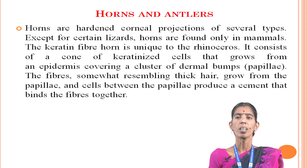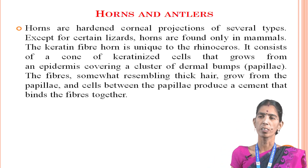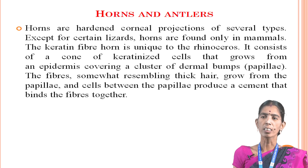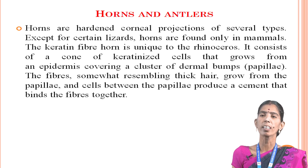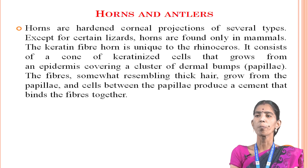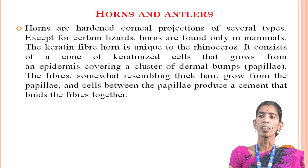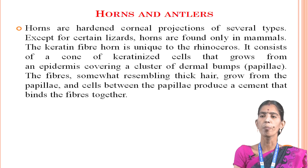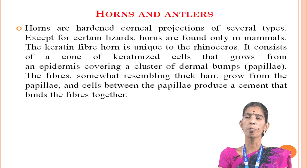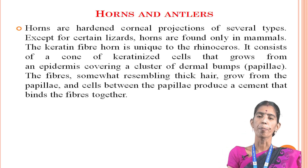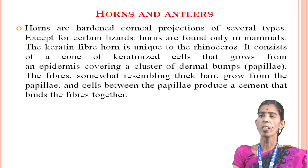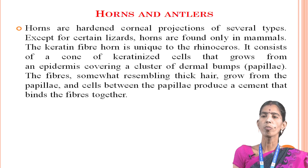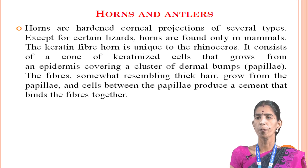Then horns. Horns are keratinized corneal productions of several types. Except for certain lizards, horns are found only in mammals. The rhinoceros horn is unique to the rhinoceros. It consists of a cone of keratin fibers. The horn grows from an epidermis covering a cluster of dermal papillae. The fibers somewhat resembling thick hair grow from the papillae, and cells within the papillae produce a cement that binds the fibers together.